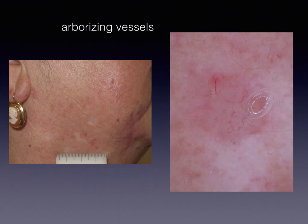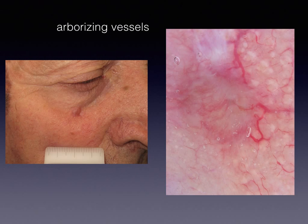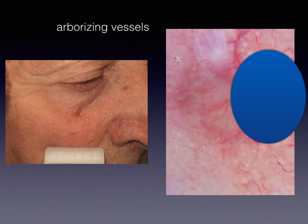Again here, the vessels are not large, they do not cross the center of the lesion and are not in perfect focus. However, they are always linear and branched. This BCC is even less typical in terms of vascular pattern — please ignore the vascular structures of the surrounding skin. The tumor vessels are far from typical, but it can still be seen that they are linear and somehow ramified.